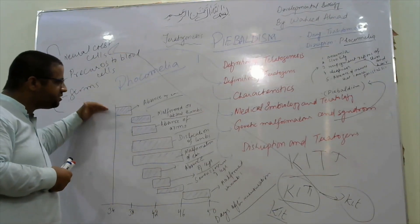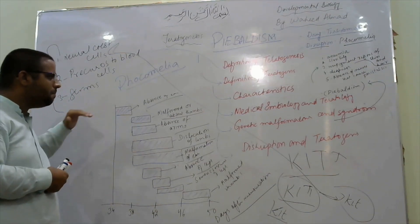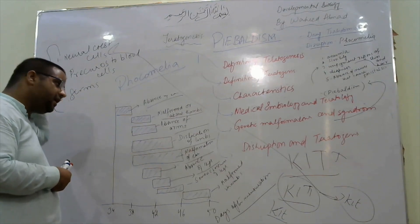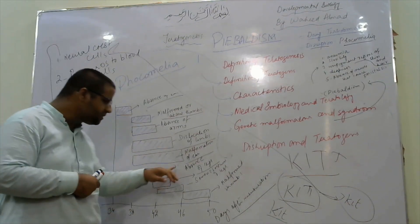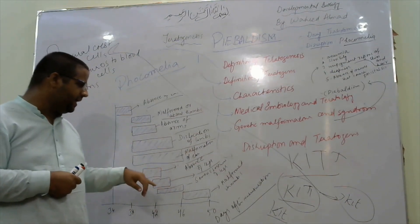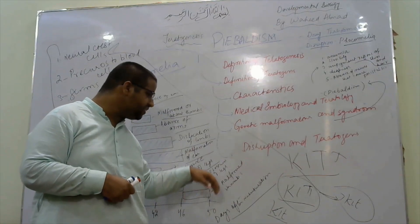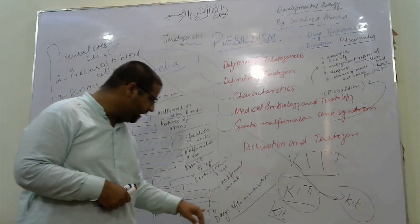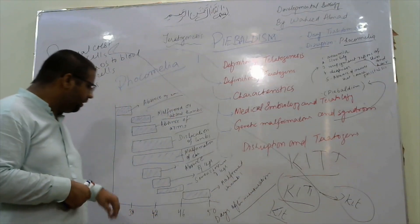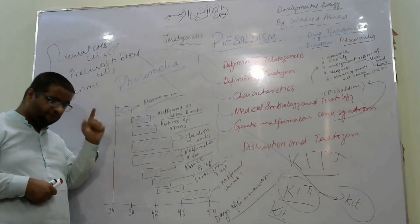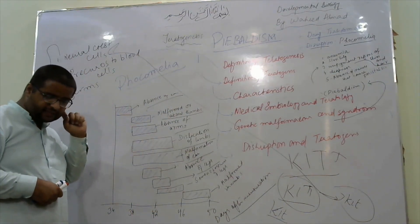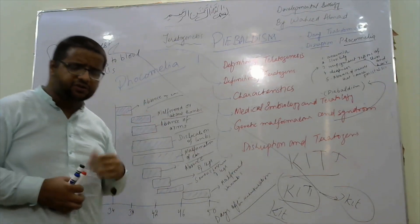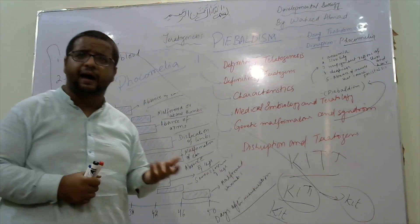The effects of phocomelia include absence of ears, malformed thumbs, absence of arms, dislocation of limbs, malformation of ears, absence of legs, shortness of legs, and malformed fingers and toes. So why do these symptoms appear after birth? Because during the developmental process, as we know, the female passes through a menstruation cycle regularly.